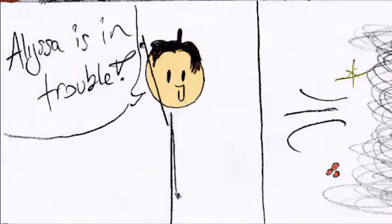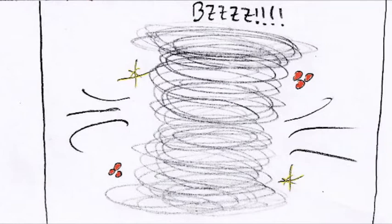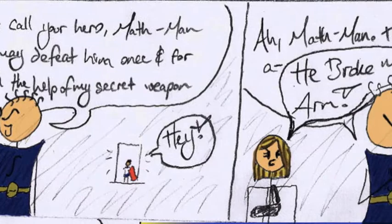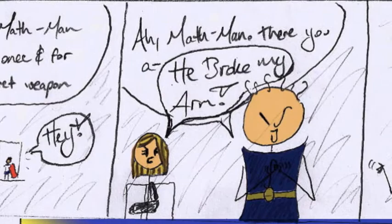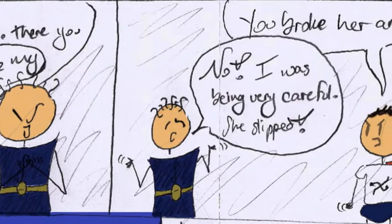Alyssa is in trouble. Math Man! Dearest Alyssa, call for your hero, Math Man, so that I may defeat him once and for all, with the help of my secret weapon. Math Man! Ah, Math Man! There you... You broke my arm! You broke her arm? No, I was just being very careful. She slipped, I swear.